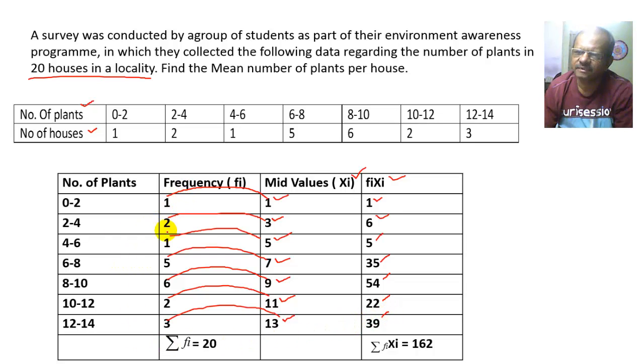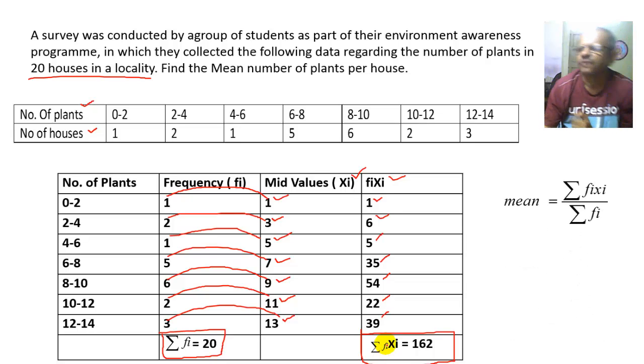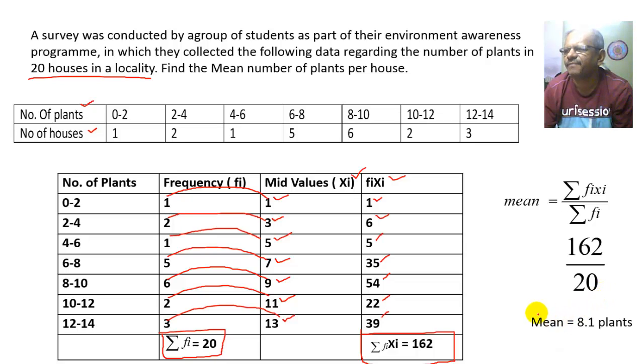Now we will take the sum of the frequency, that is 1 plus 2 plus 1 plus 5 plus 6 plus 2 plus 3 equals 20. Summation of Fi Xi is 1 plus 6 plus 5 plus 35 plus 54 plus 22 plus 39 equals 162. Now apply the formula. Mean equals summation of Fi Xi upon Fi, therefore it is 162 upon 20. Therefore mean equals 8.1 plants.